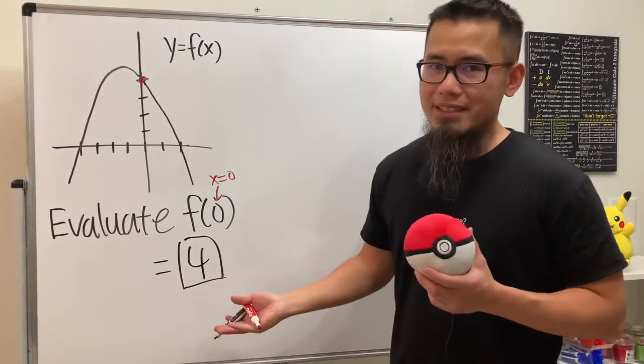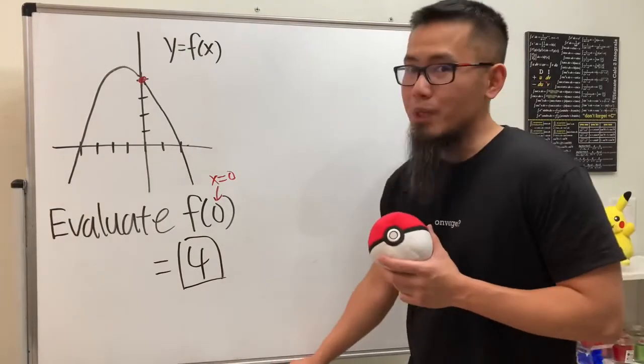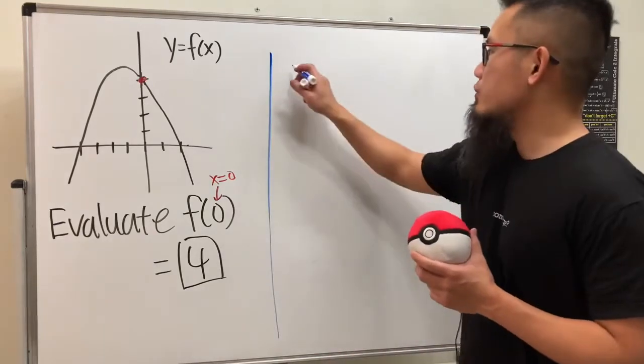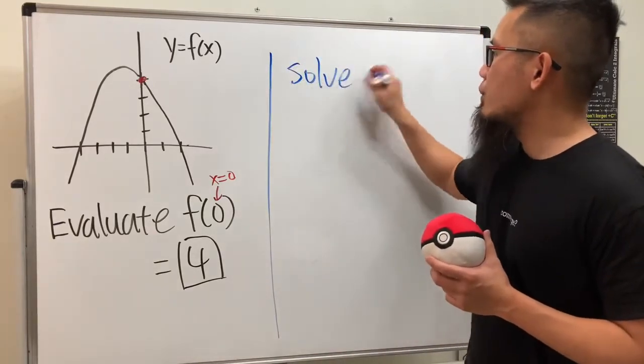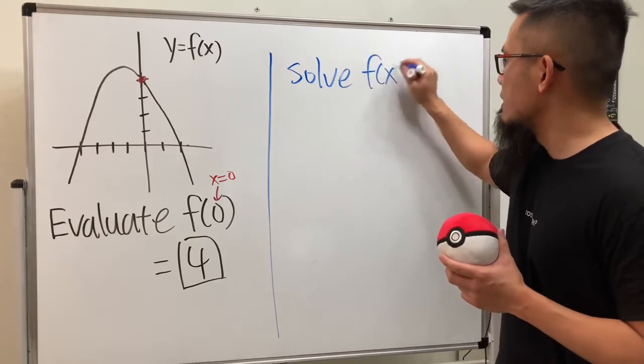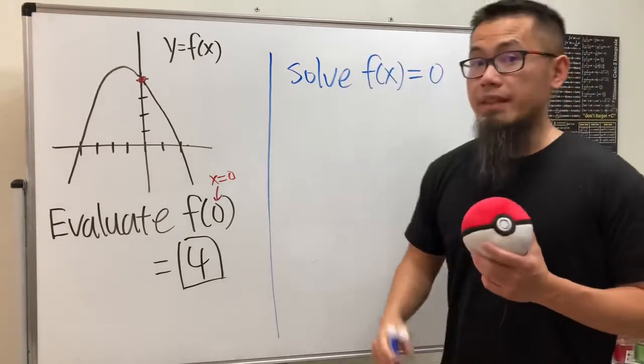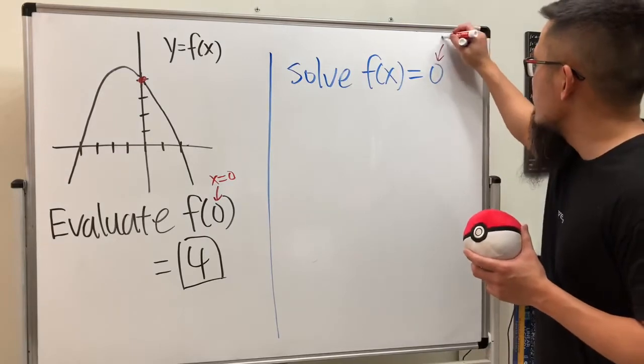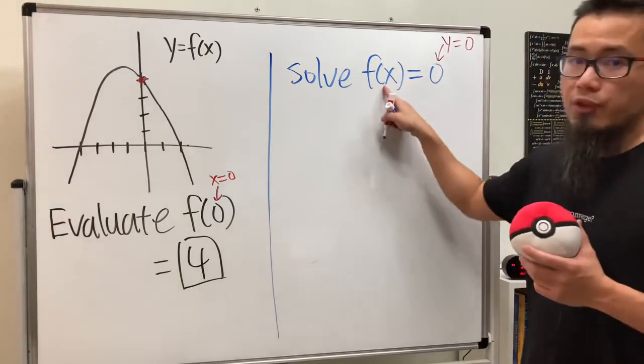And that will be it, but before we go, I would like to use this picture to go over another question. If the question is saying, hey, go ahead and solve for f of x is equal to zero, then this will be different. This will mean that y is equal to zero, and we have to figure out what x are.